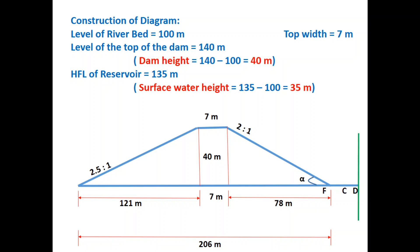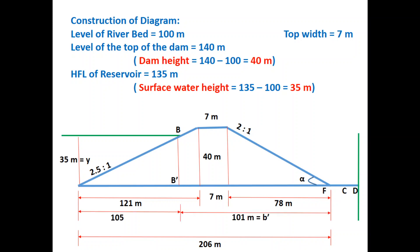We can see the directrix line which is far away from F, with a distance of s. Point C will be the point where the phreatic line joins, equal to s/2 from F. We can find the surface water with 35 m height. We can also find the distance from focus point F to point B, and then find the distance from B to the heel area.